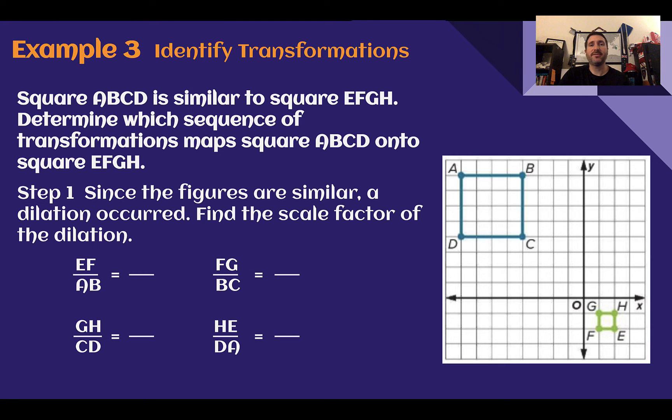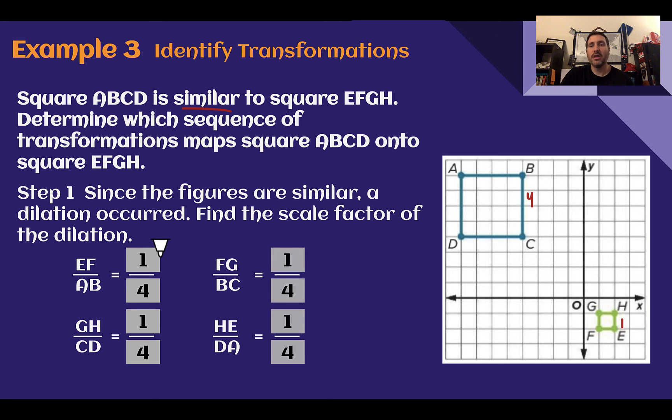Example 3, identify transformations. Square ABCD is similar to square EFGH. Determine which sequence of transformations maps our square onto the other. Since the figures are similar, it means a dilation has occurred. We know we have to somehow get it to go from one to the other. How do we do that? It started at four. Now it's at one. So if we compare each side, they all have a ratio of one to four. All the sides started at four, ended at one. So our dilation would be one fourth. Or in essence, we are dividing by four.